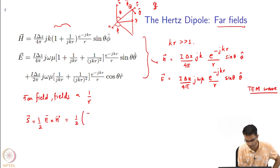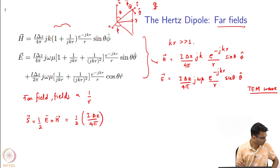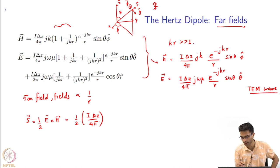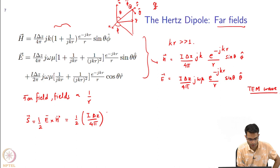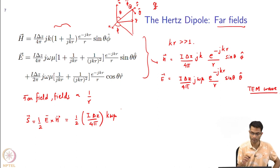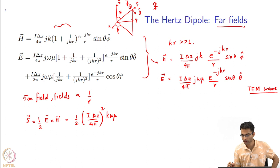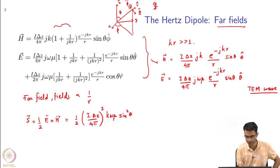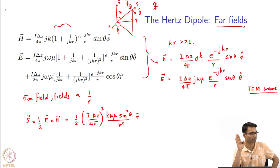The magnitude will include (I·Δz / 4π)², j times −j gives +1, so we get k·ω·μ whole squared, times sin²(theta) divided by r², in the r-hat direction. So I have power going as 1/r². I have derived this for a Hertz dipole, but this is true for any antenna structure — even for a mobile base station, far away the fields are of this form.